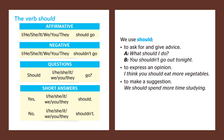The verb that comes after 'should' is always in the base form — it doesn't add 's', 'es', 'ed', or any other ending. For the negative form, it will be 'shouldn't' or 'should not'. For questions, we start with 'should', then the subject, then the verb and the rest of the sentence. For example: 'Should + subject + base verb...?'